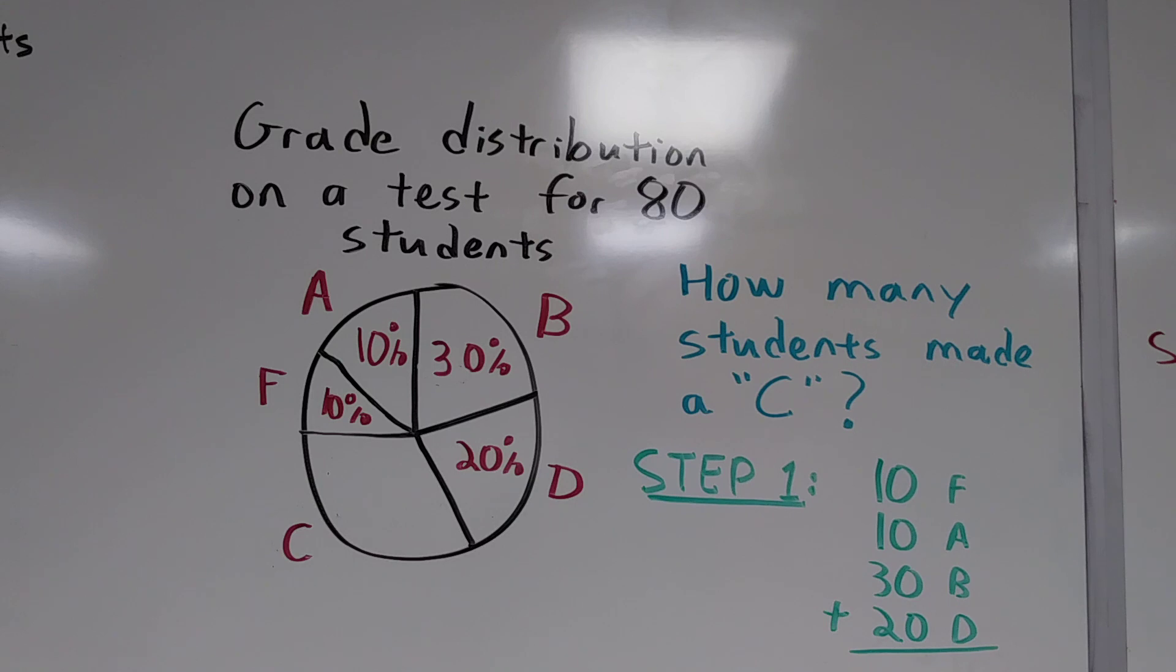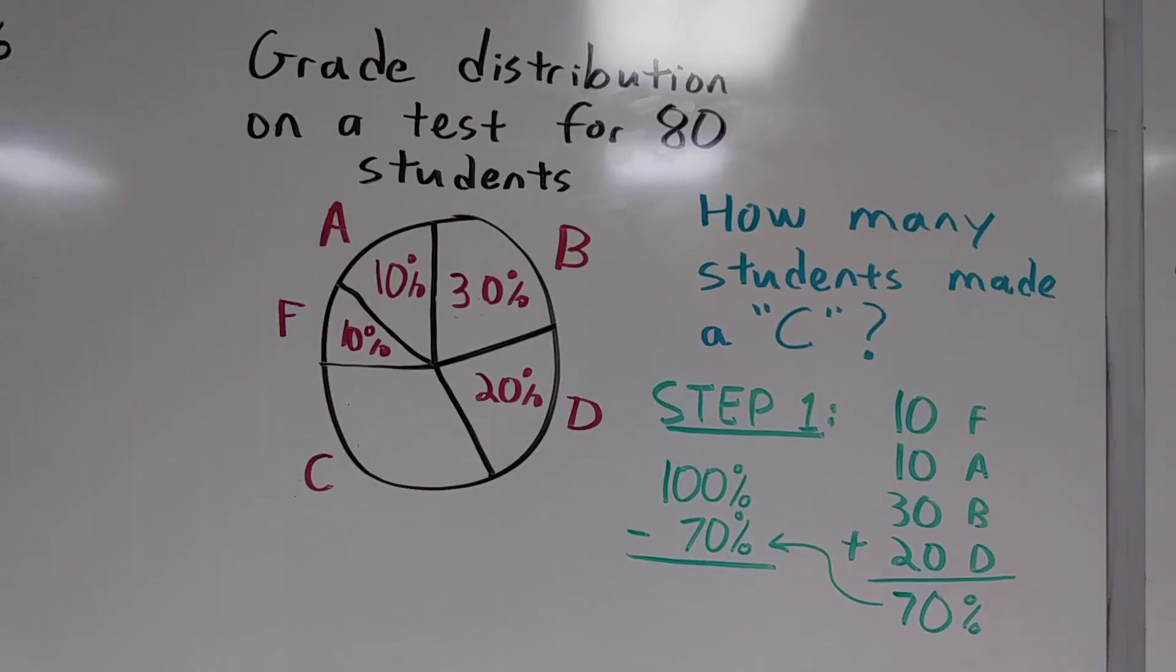Step one requires us to find the missing percentage. If we take all of the percentages we do know and add them up, we'll be able to find the percentage of students who made everything but a C. If we subtract that percentage from 100%, whatever we have left over must be the students who made a C on the test. Now we've found the missing percentage. 30% of students made a C on the test.